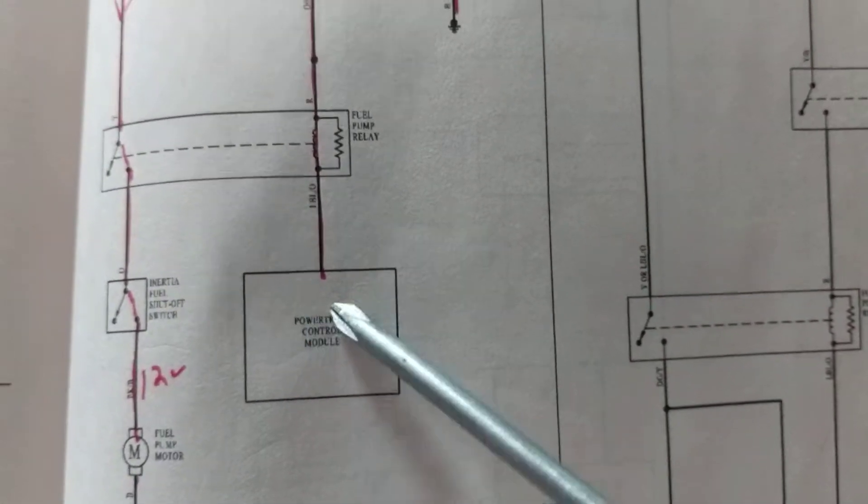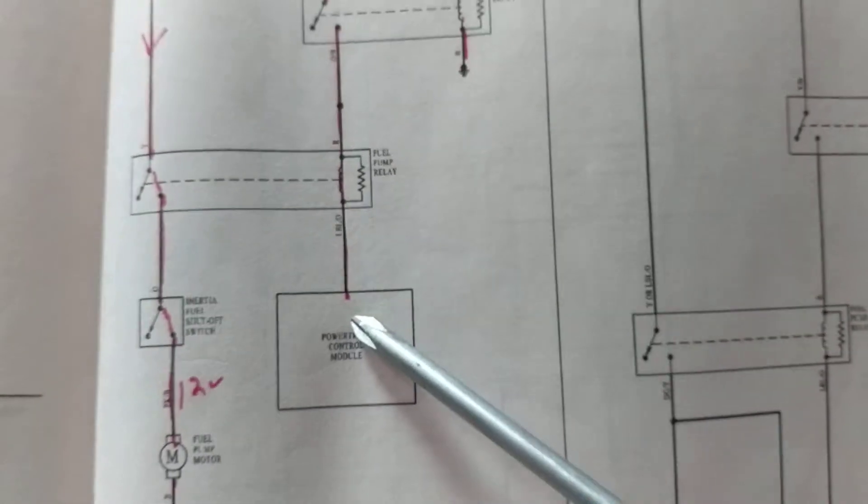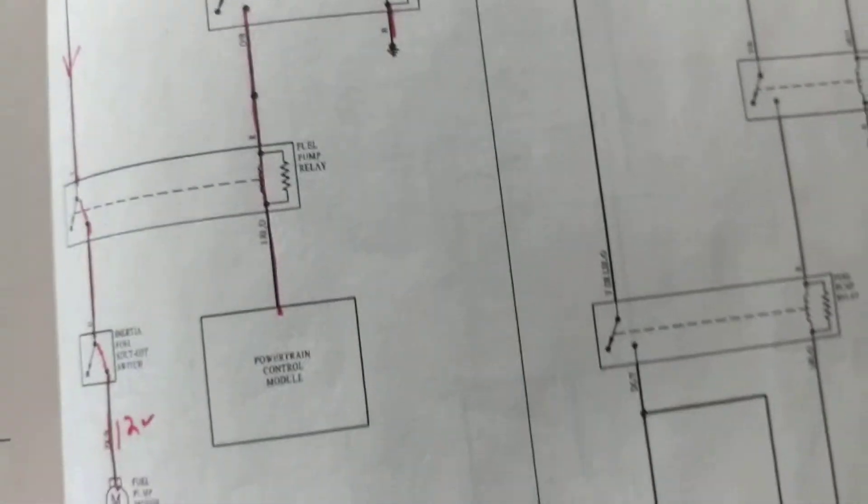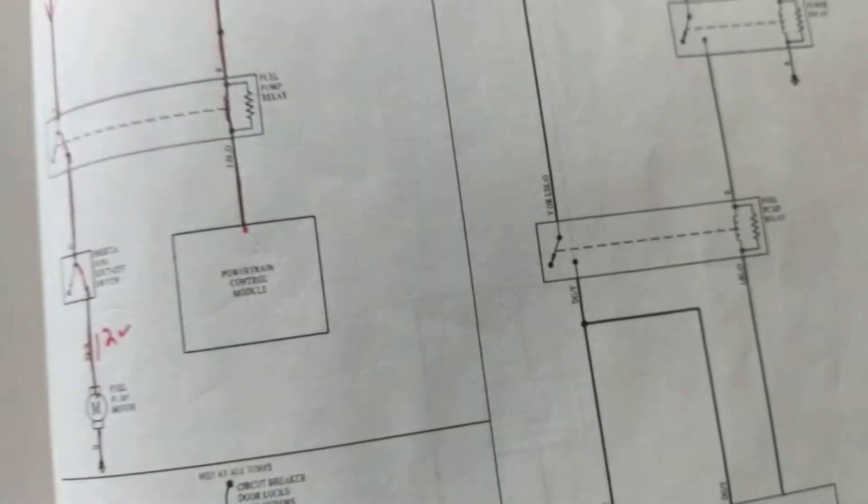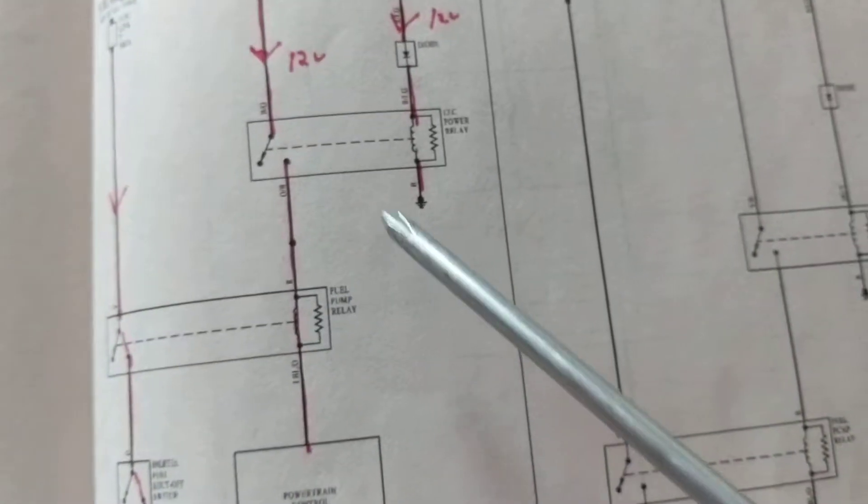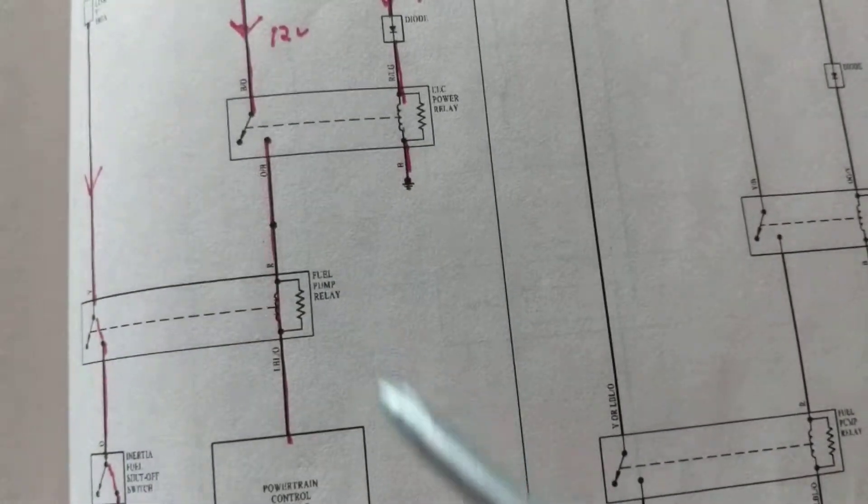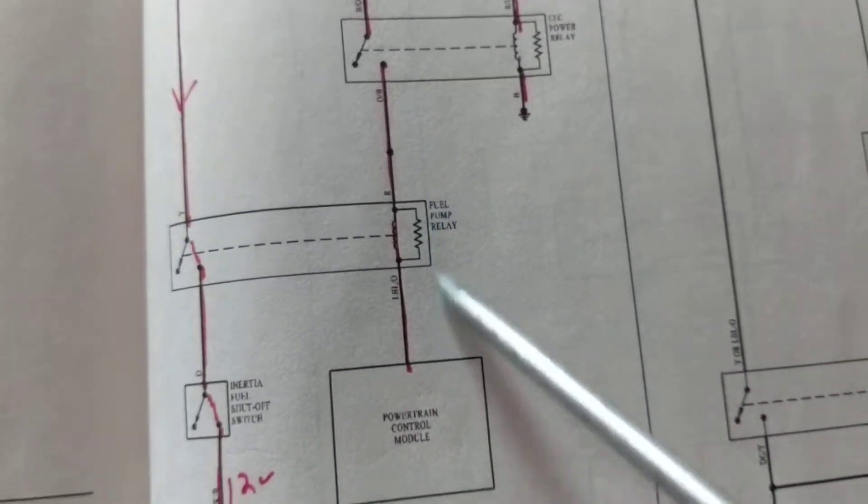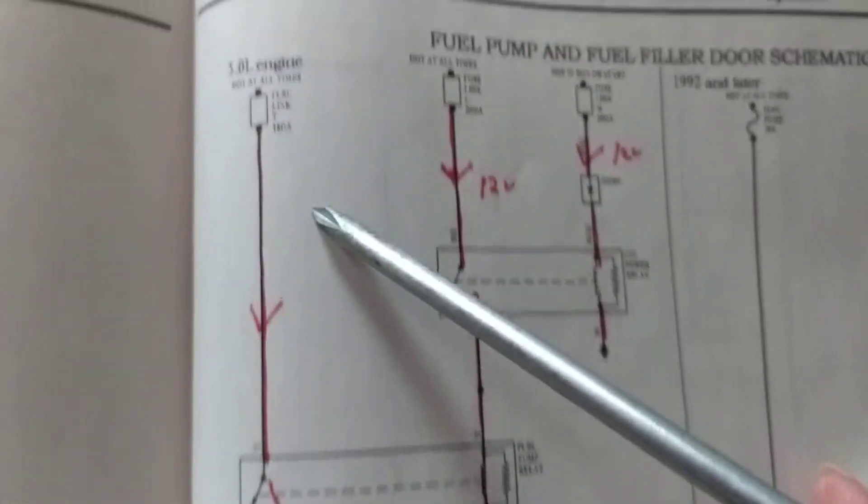This is the key. So it's not so simple anymore, it's just not a ground like a chassis ground, no. The powertrain, the PCM, the computer gives us the ground in order to energize the fuel pump relay. Once this is magnetized, current can flow.